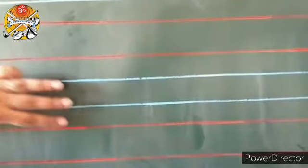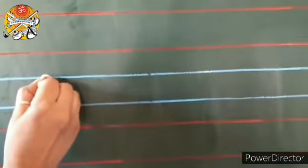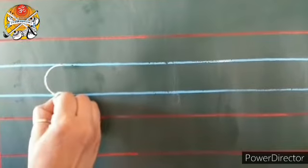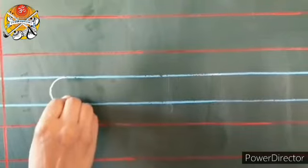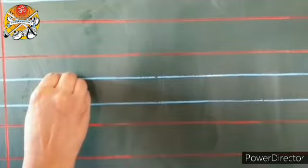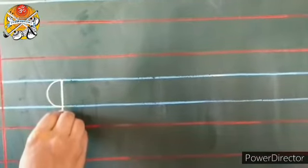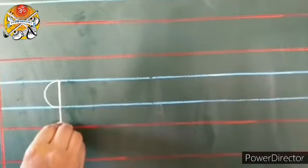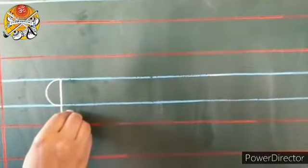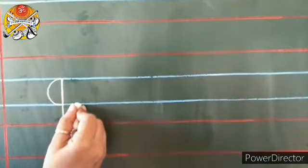Children, script letter Q we will write in these three lines: first blue line, second blue line, and the last red line. From first blue line to second blue line, make a C curve. Then from here go up and touch the first blue line. Come down on the same line and go down till the red line.